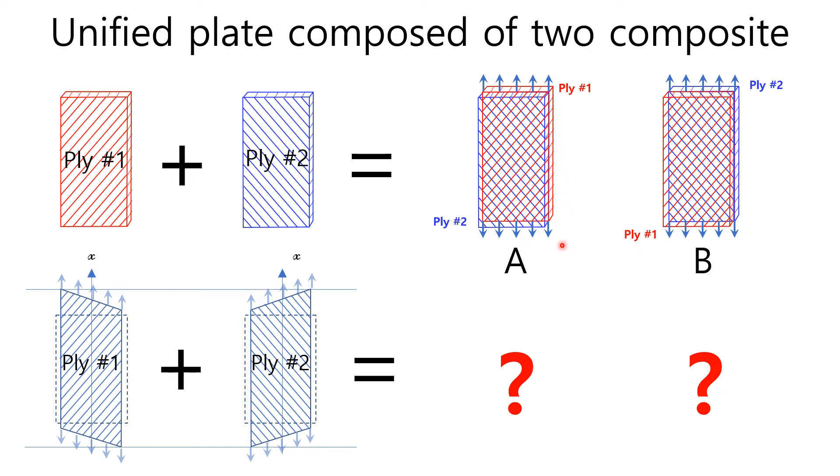Ply 2 comes first per type A combination, and Ply 1 comes first per type B combination. Can you imagine what will be the deformation shape?